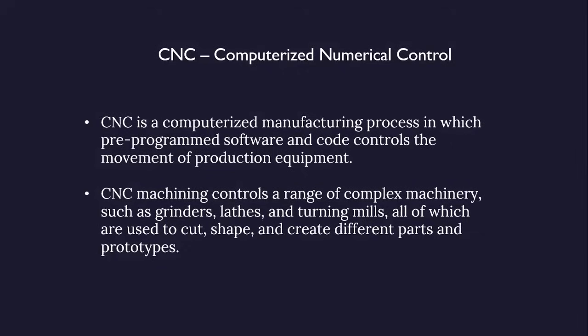CNC is a computerized manufacturing process in which pre-programmed software and code controls the movement of production equipment. CNC machining controls a range of complex machinery such as grinders, lathes, and turning mills, all of which are used to cut, shape, and create different parts and prototypes.